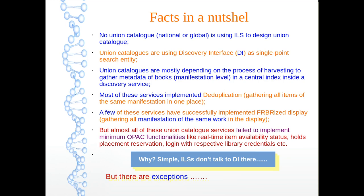Facts in a nutshell: no union catalog is using ILS to design the union catalog. Union catalogs are using discovery interface as a single-point search entity. Union catalogs are mostly gathering metadata through harvesting because most back-end ILS are now OAI-PMH compatible. Most services implement deduplication. A few like Trove have successfully implemented FRBRized display — gathering all manifestations and expressions under a particular work. But almost all union cataloging services fail to implement minimum OPAC functionalities: real-time item availability, holds preference setting, ILS-based authentication, and so on. Why? Because ILS does not talk to the discovery interface.